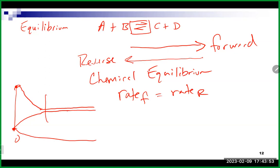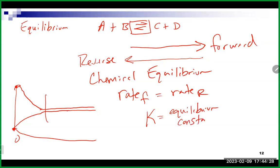Once equilibrium is reached, there will be no change in the concentrations of reactants and products — and even pressures if we're talking about gases — as long as you don't disturb the equilibrium. This does not mean we have the same amount on both sides, which is a common misconception. There is also the capital K, the equilibrium constant, calculated by taking products over reactants — a constant value for a particular reaction.